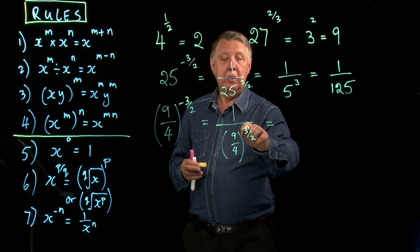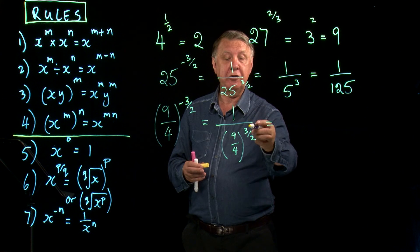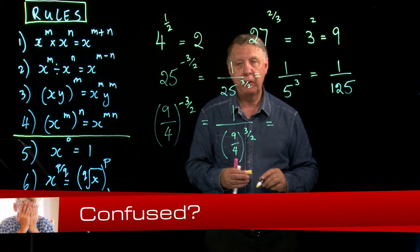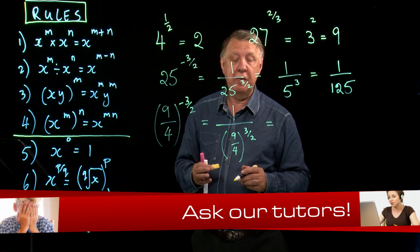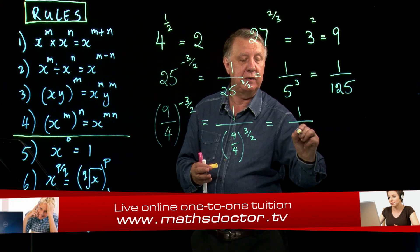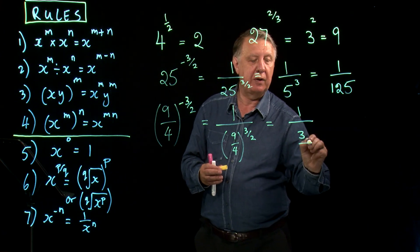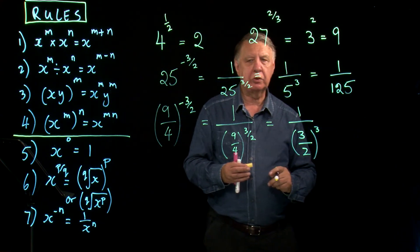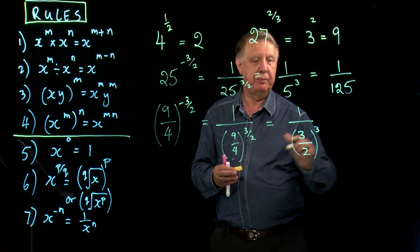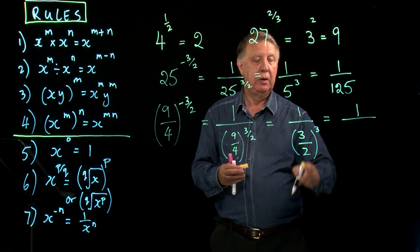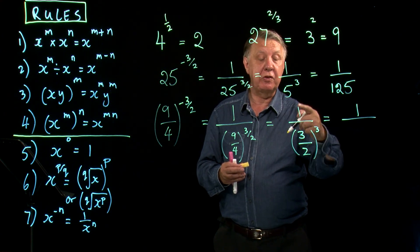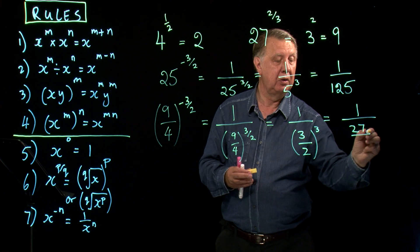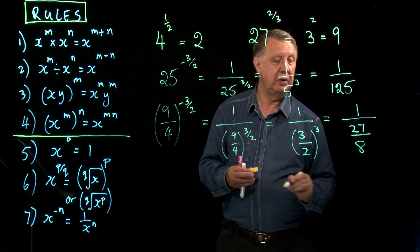Now 3/2 is a fraction power. The bottom number is the square root. What is the square root of 9/4? Well you should know that the square root of a fraction is the same as square rooting the top number which is 3 and square rooting the bottom number which is 2. You must make sure your fraction skills are up to speed with this. Now it's still 1 over 3/2 cubed. What does that mean? It means 3/2 times 3/2 times 3/2. So 3 times 3 times 3 is 27. 2 times 2 times 2 is 8.